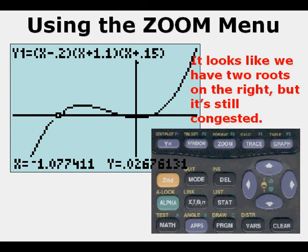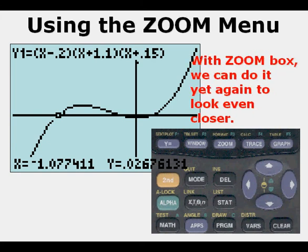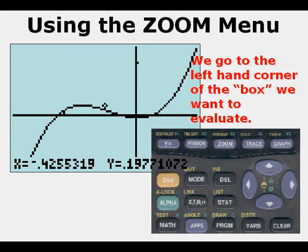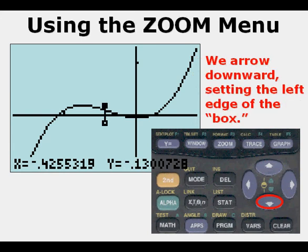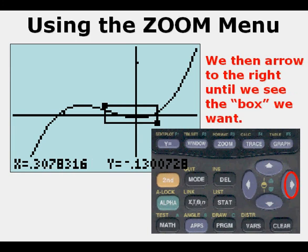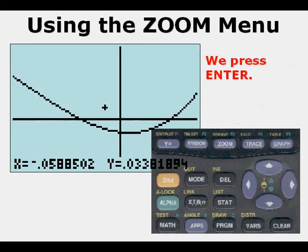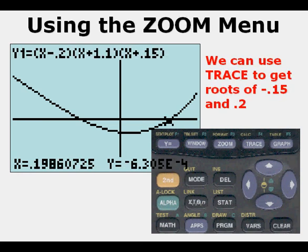So we can use the zoom box yet again to look even closer. We're going to go to zoom box and we're going to put the cursor up there in the upper left-hand corner. So we press enter. And then we go down to form the left edge of our new box. And without pressing enter, we go over to the right. And then we press enter again. And now we have a really good look. We can see that first root we evaluated, negative 1.1, and we see there are two other roots.